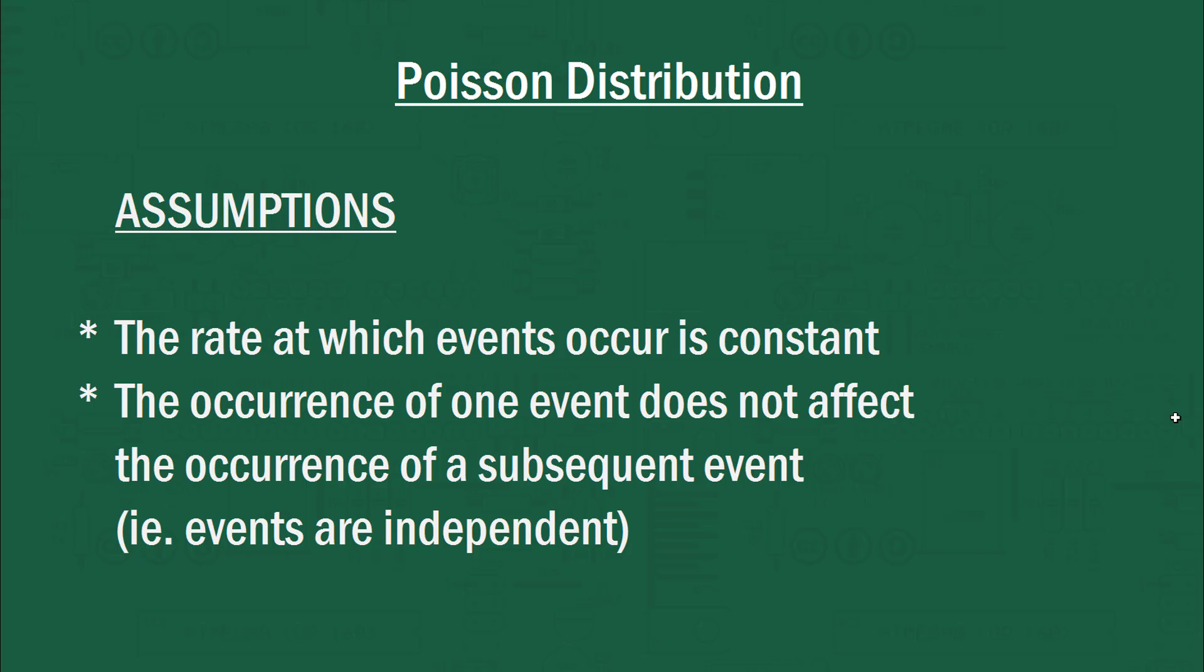The other assumption is that the occurrence of one event does not affect the occurrence of a subsequent event, i.e. the events are independent. So it shouldn't matter if an event just happened, it shouldn't influence the time interval till the next event. Now, these assumptions won't necessarily hold in reality. So it's often good to appreciate when you're using the poisson distribution, just how relevant it is to the question at hand. And we'll see with some examples here whether these assumptions are going to break down.